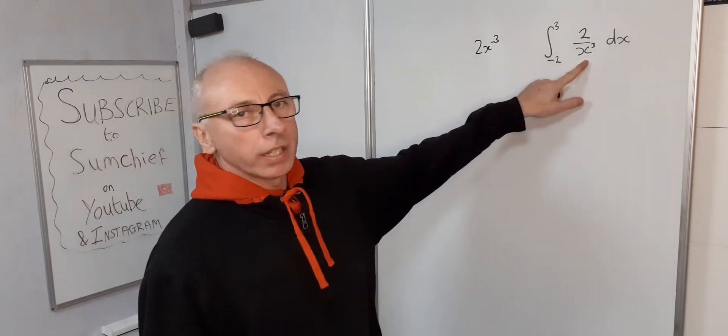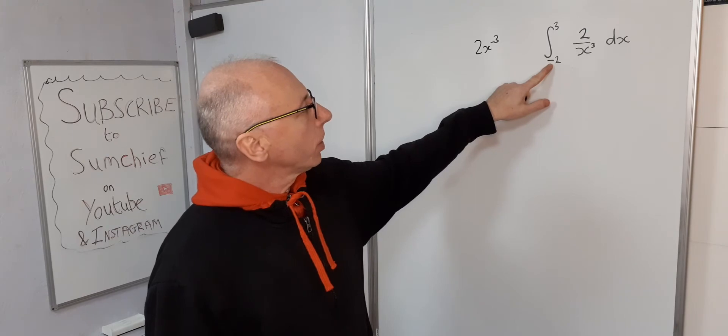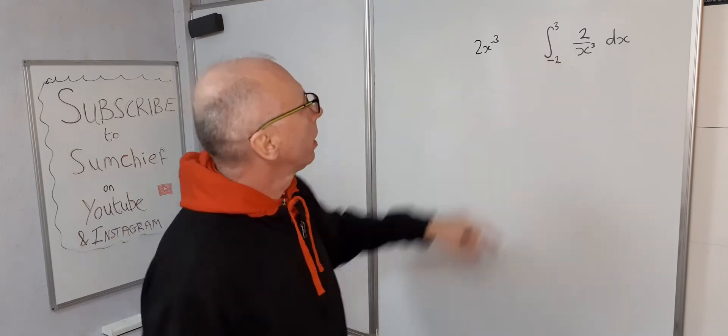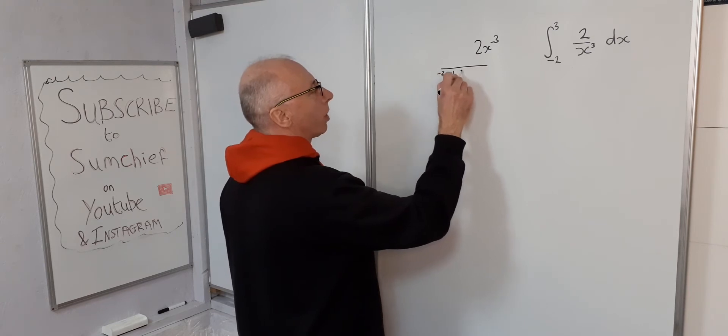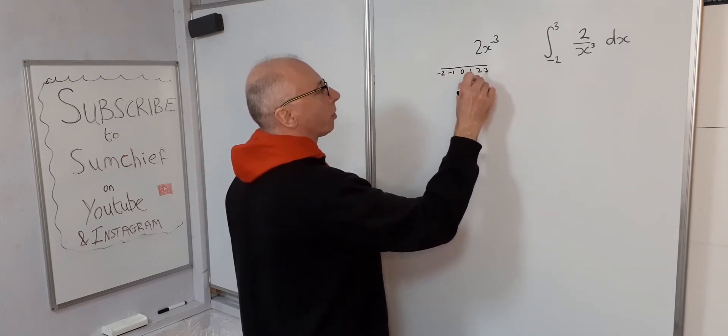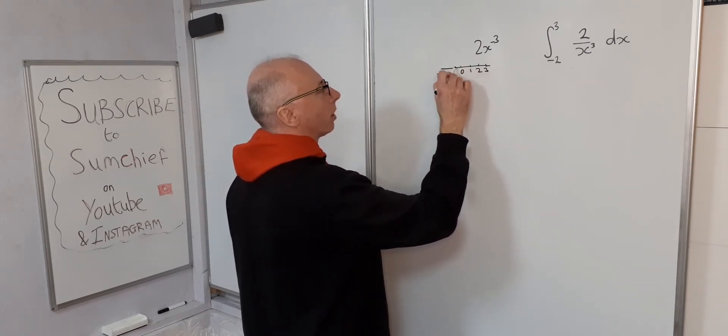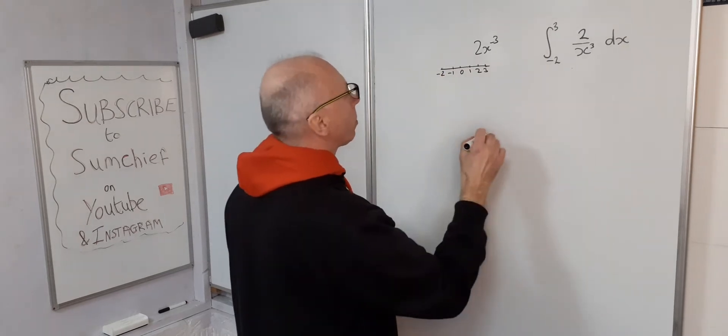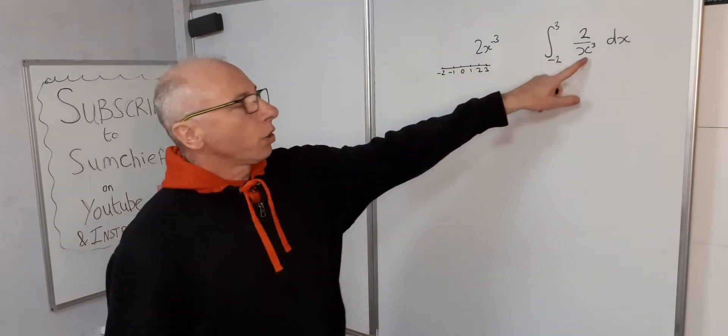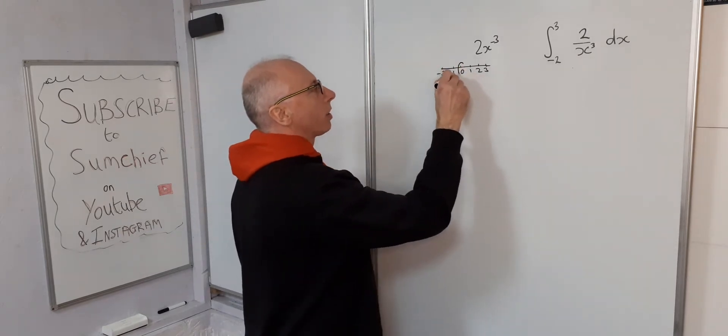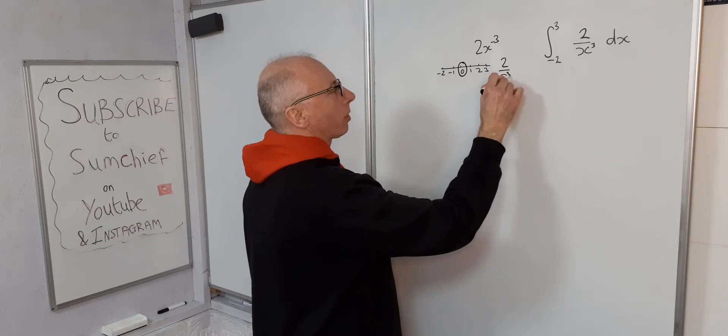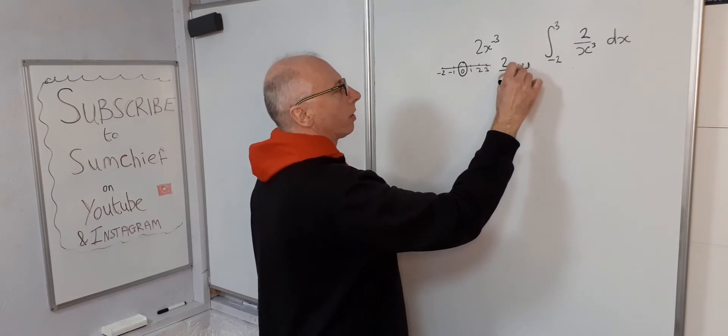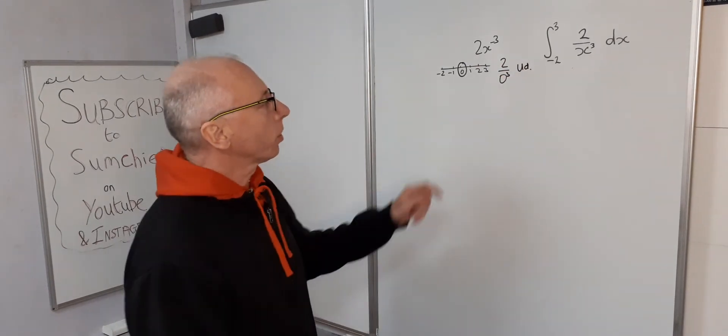Now slight problem we've got here is the limits of integration from minus 2 to 3. Just draw that on a number line: minus 2, minus 1, 0, 1, 2, 3. All these values for 2 over x cubed are all good till we get to 0. 2 over 0 cubed—undefined, that's no good to us.